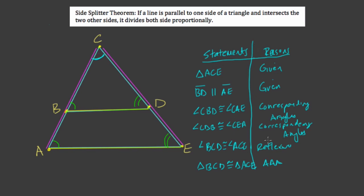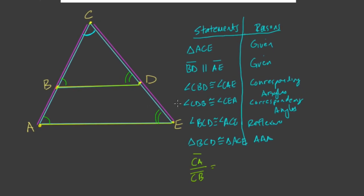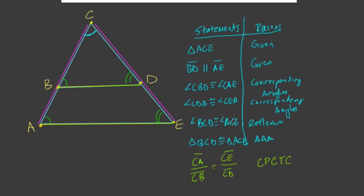And this would be the proportion we can use to prove the side splitter theorem. So based on this logic right here, we know, for example, the ratio of the two longer sides, the longer side of CA, or side CA excuse me, to shorter side CB, is going to equal the ratio of CE to CD. So this is not exactly the side splitter theorem yet. It's close to it.